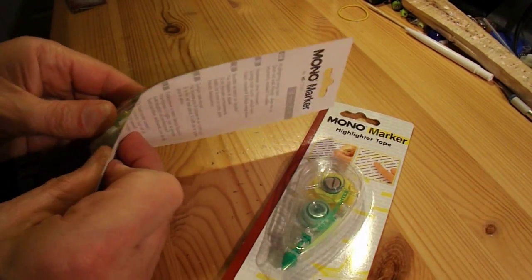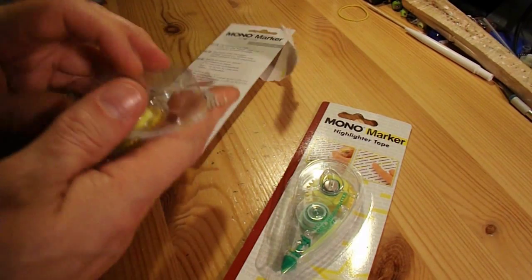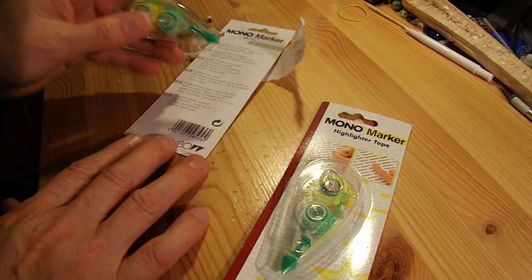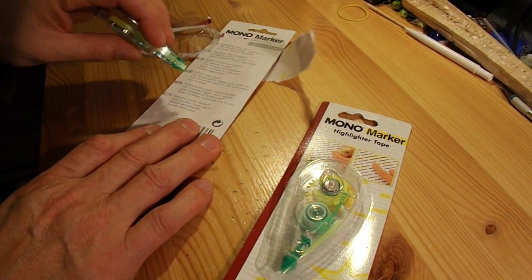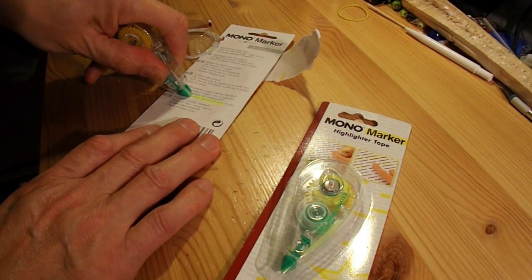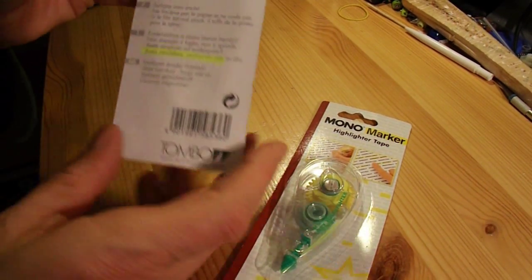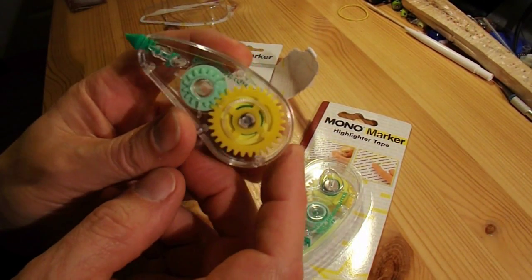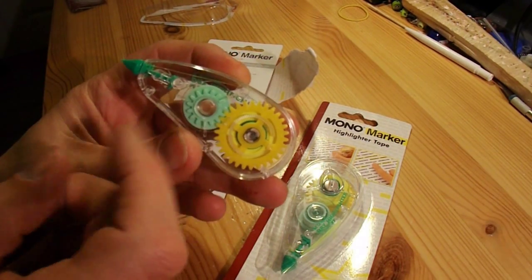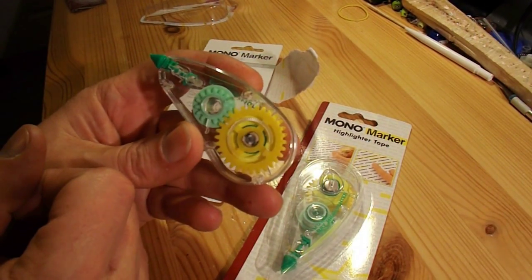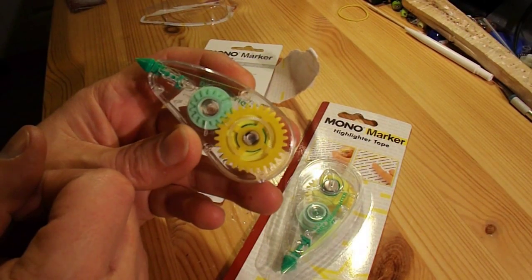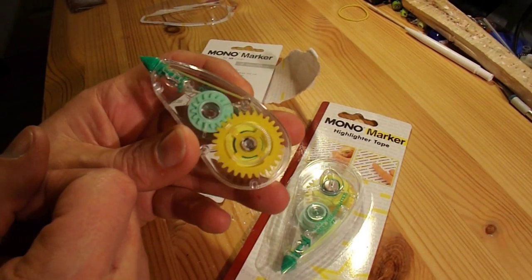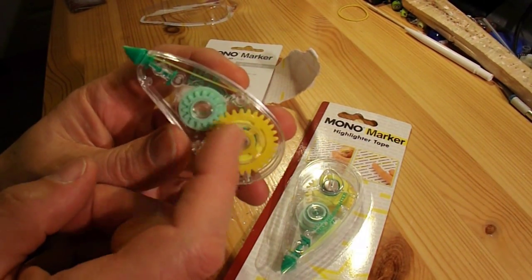Let's see if we can get one out. The idea is you use them, well you're supposed to be able to use them. That's better. To highlight things. I picked them up because they've got a couple of toothed gears. And I thought, I wonder if I'll be able to use those for anything. So that's what the project will be, to see if I can make use of those gears.